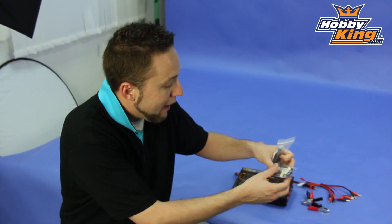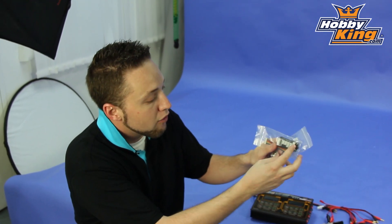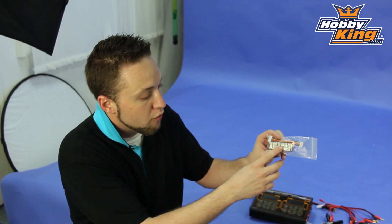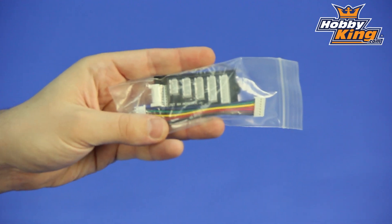Also included are two balance boards: a Thunder Power/Flight Power style board and the standard JST XH board, which fits Turnigy, Zippy, and Rhino batteries.